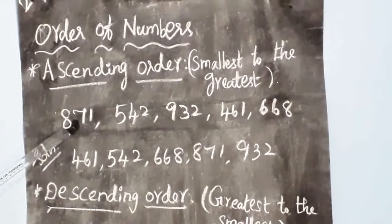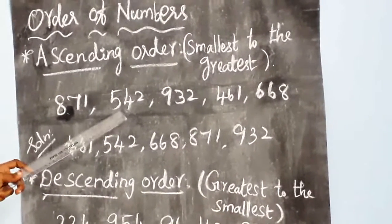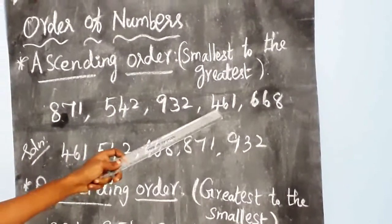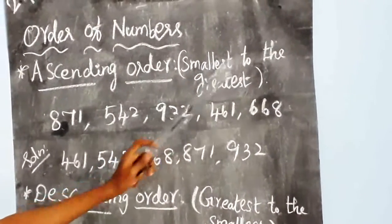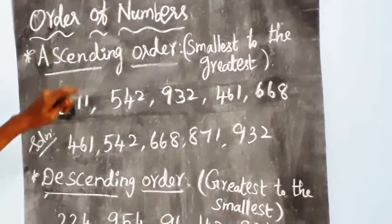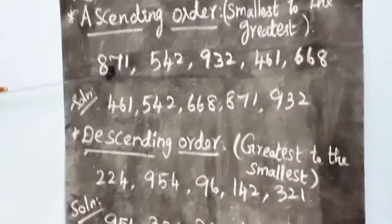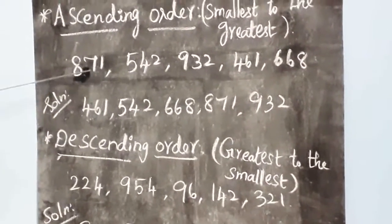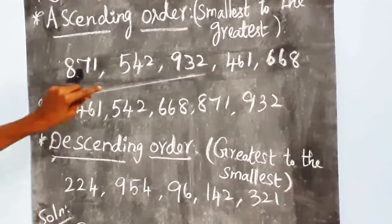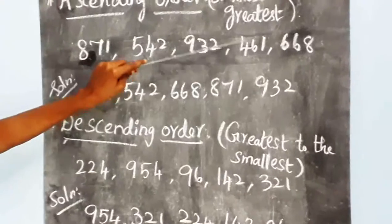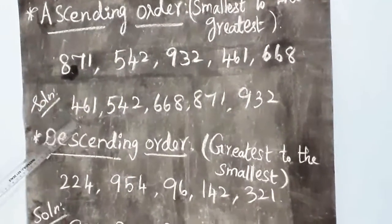Now look at 871, 542, 932, 461, 668. One example will be given. Ascending order is smallest to greatest. Look at the 100 place. Which one is the smallest of the 100 place? Here we have 8, 5, 9, 4, 6. Yes, 4 is the smallest. So you write first 461.